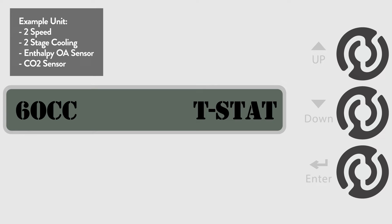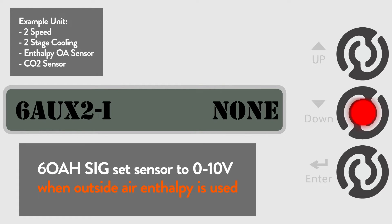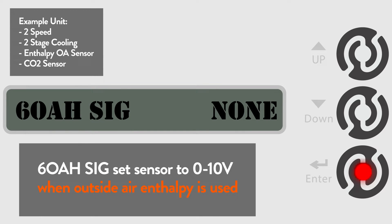Since the controller default assumes a dry bulb temperature sensor, we will have to activate the outside air humidity to get an enthalpy reading. Go to the 6 OAH SIG menu. The default is none, but for this example we are using an outside air enthalpy and will need to change the default setting for outside air humidity to 0 to 10 volts.